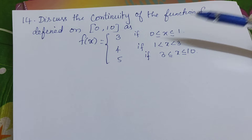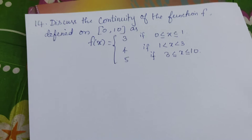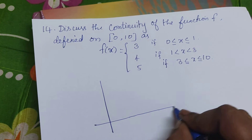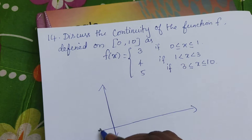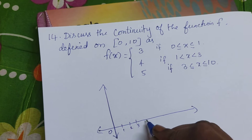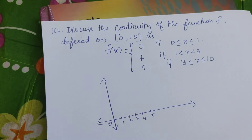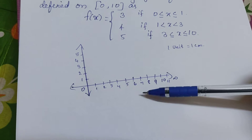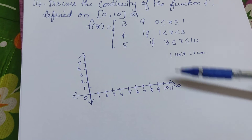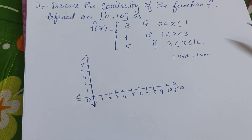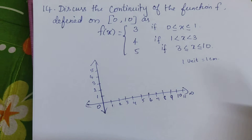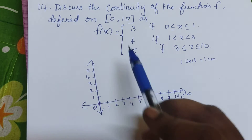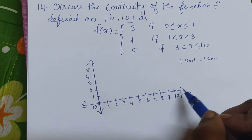I will consider a line and try to plot the given function on a graph. Here we have the x-axis and y-axis. Just assume one unit equals 1 cm. We will consider the interval 0 to 10, which means we include both 0 and 10 since it is a closed interval.